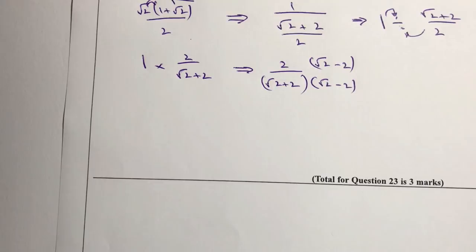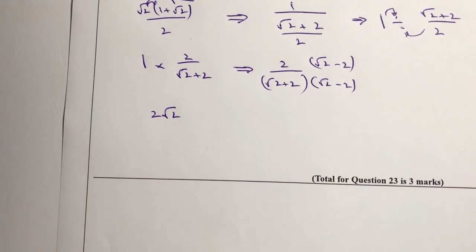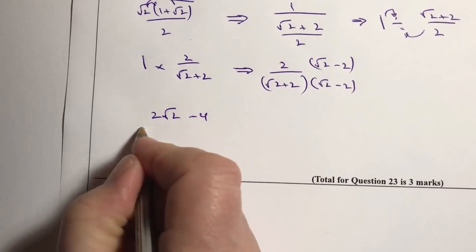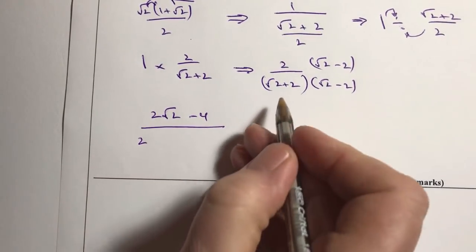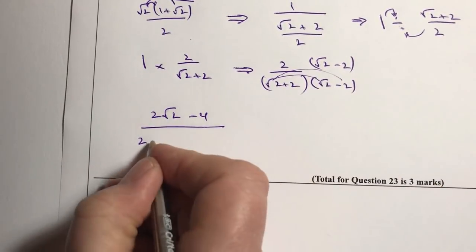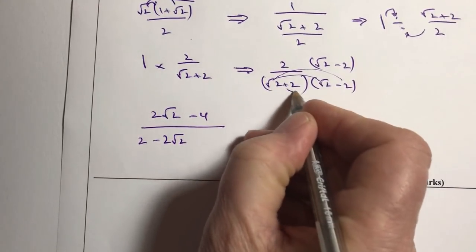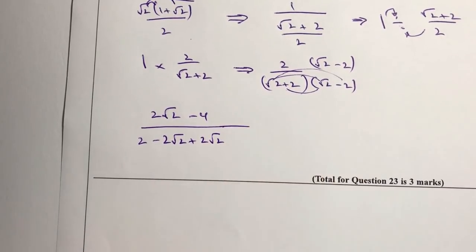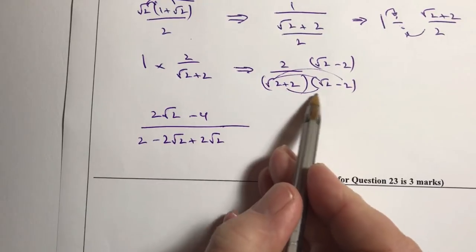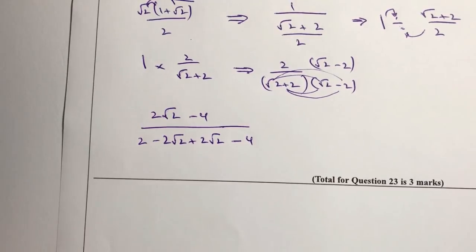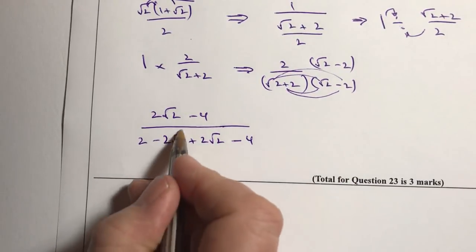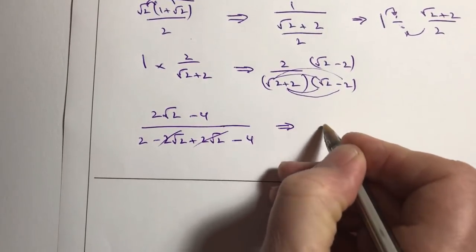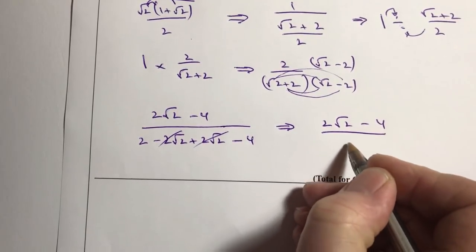Let's expand that now. At the top I've got 2 times root 2, which is 2 root 2, and then 2 times minus 2, which is minus 4. At the bottom I've got root 2 times root 2, which is root 4, the same as 2. Then I've got minus 2 root 2 and plus 2 root 2 — those two terms cancel out. And then plus 2 times minus 2, which is minus 4. So what I end up with is 2 root 2 minus 4, divided by minus 2.